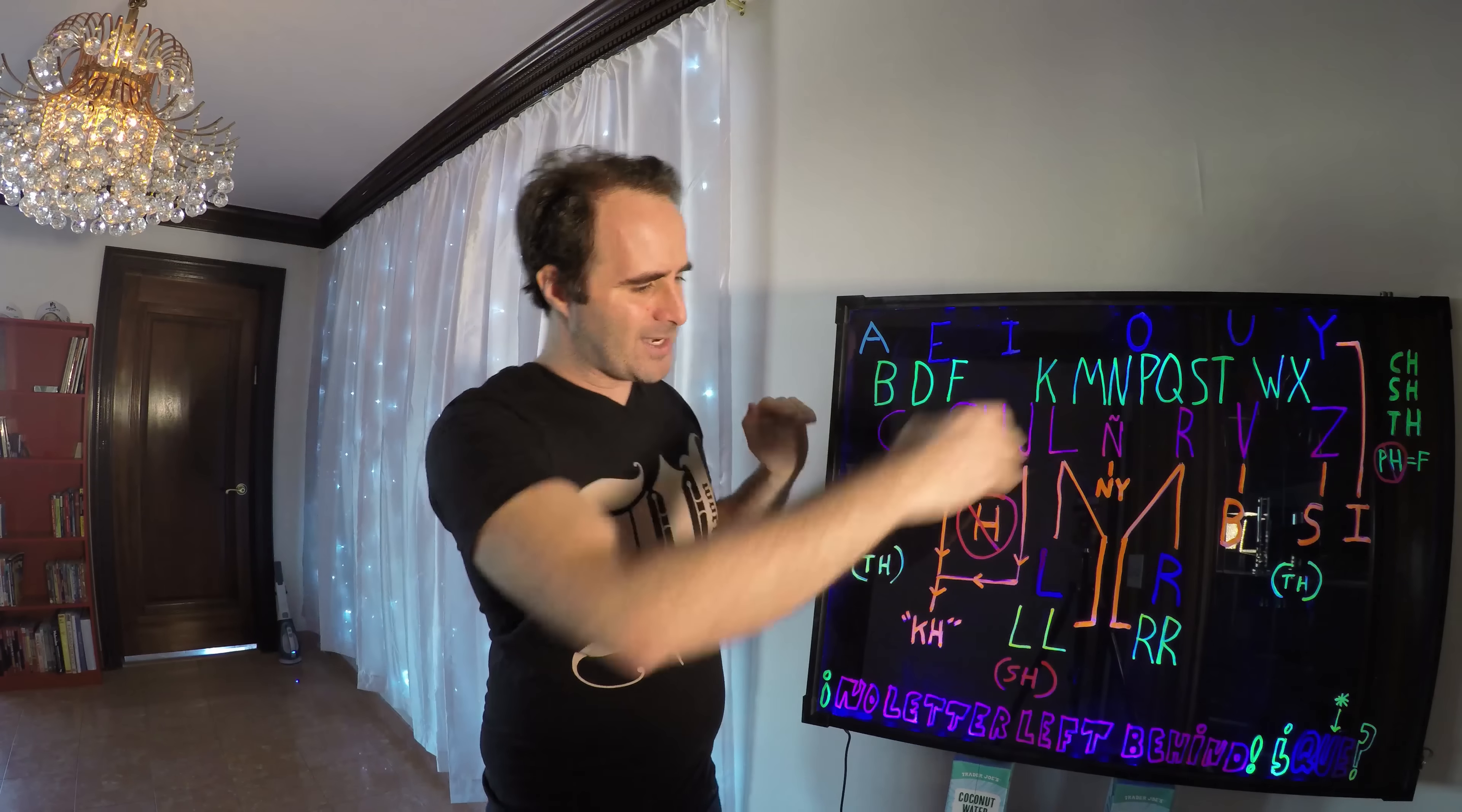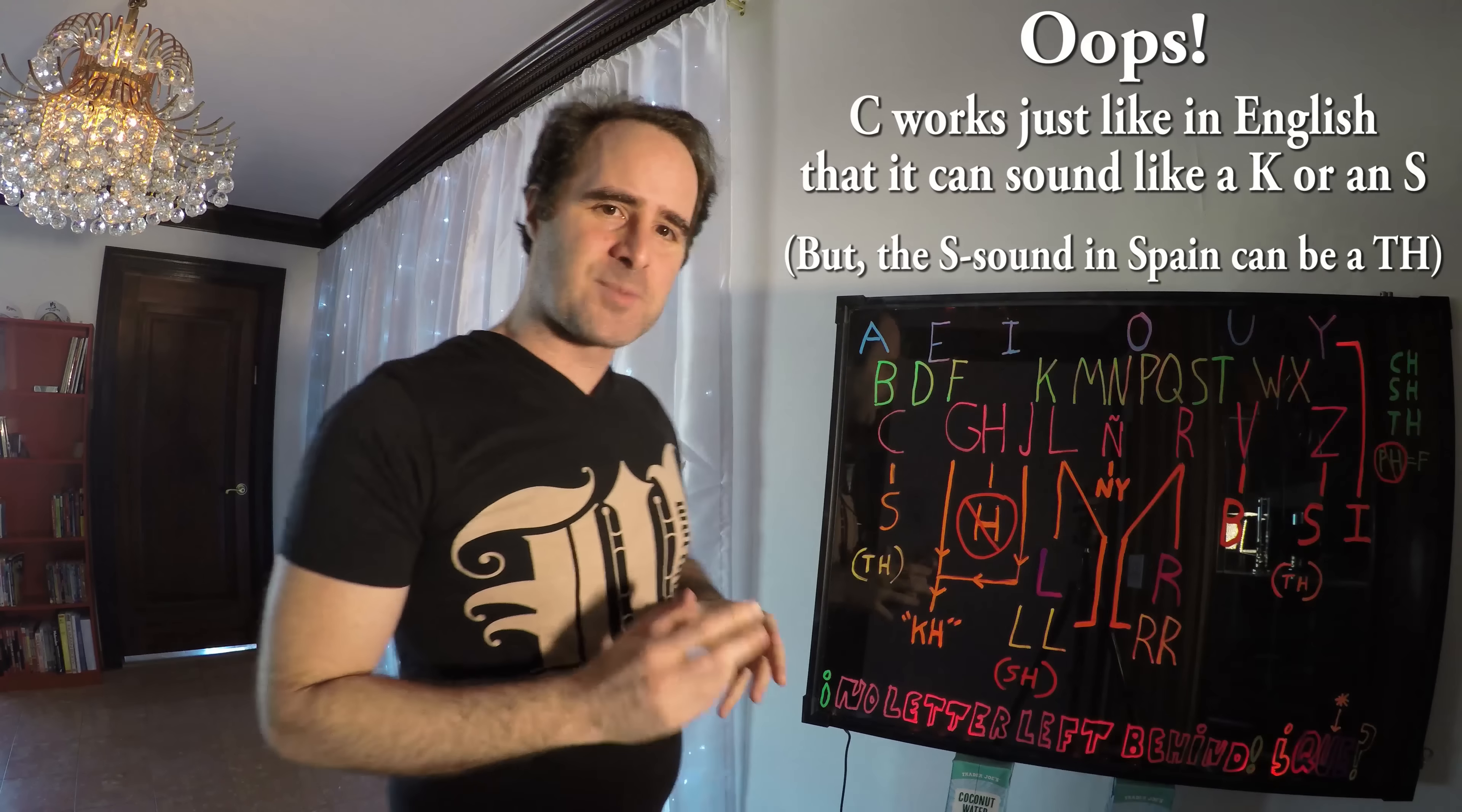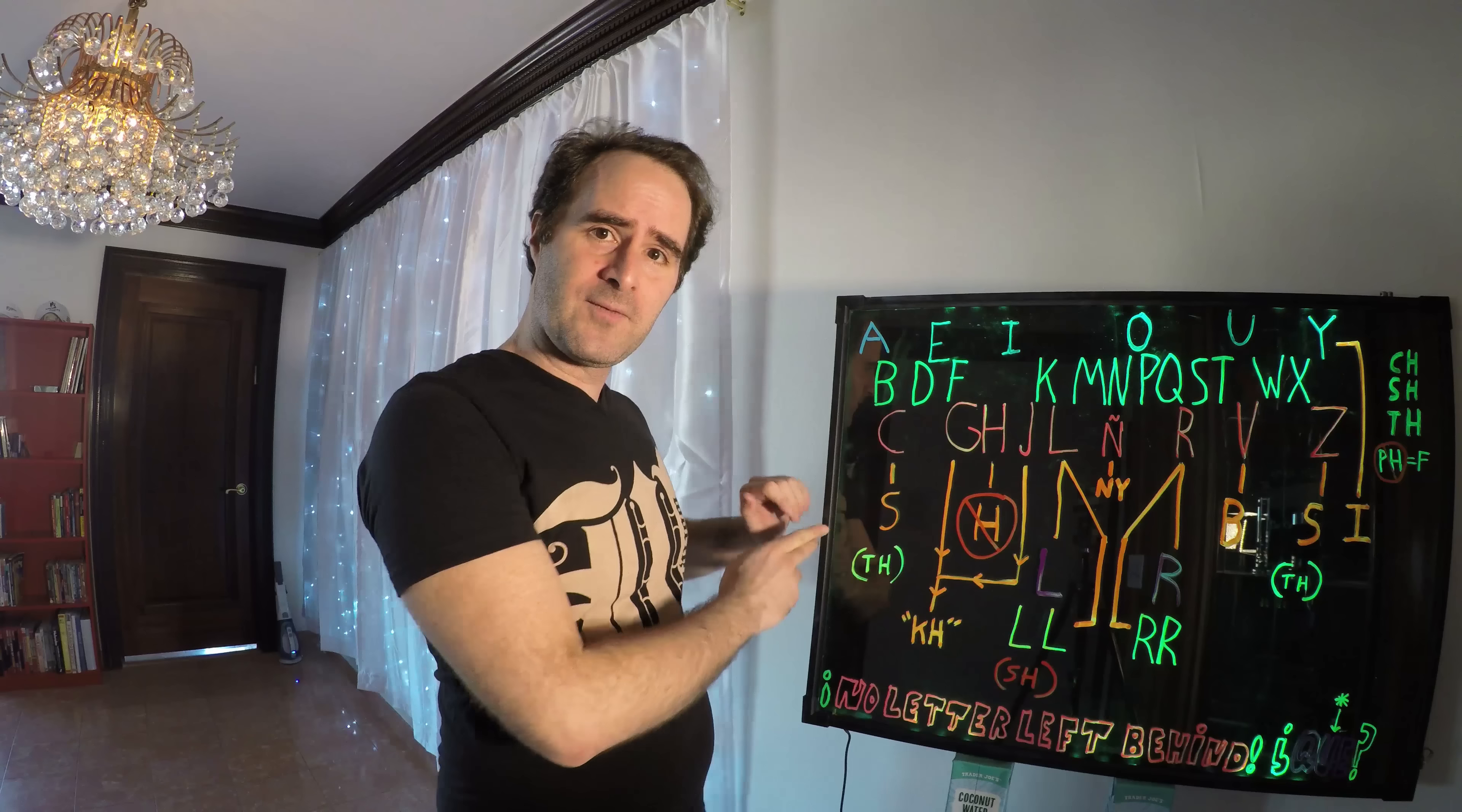Now let's go in alphabetical order of the letters that are different. Starting with C. C is pretty much an S in Spanish, except if you are in the country of Spain. Now that's one of the exceptions of the dialect. So S in Spain becomes a TH, like the word the. So the word gracias, which has a C in the middle, becomes gracias. Gracias. Gracias. Alright, so that's pretty much one of the only few exceptions. That's Spain.